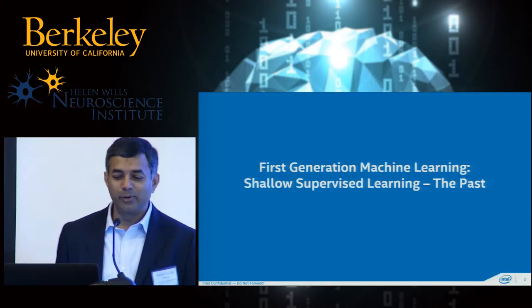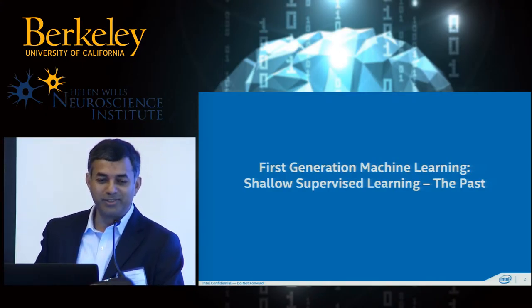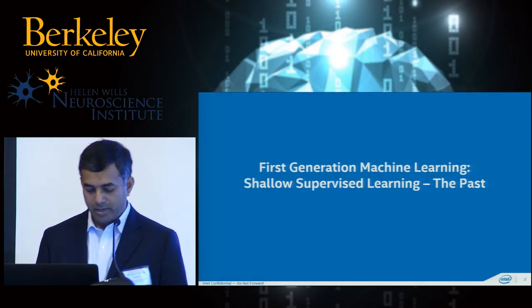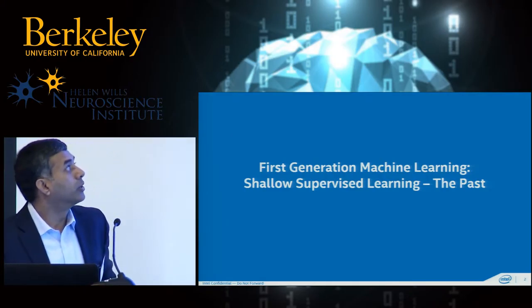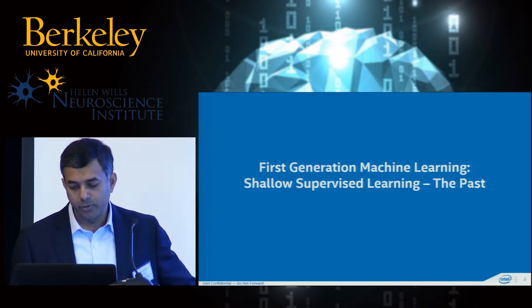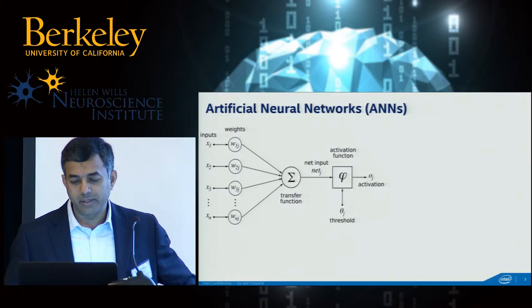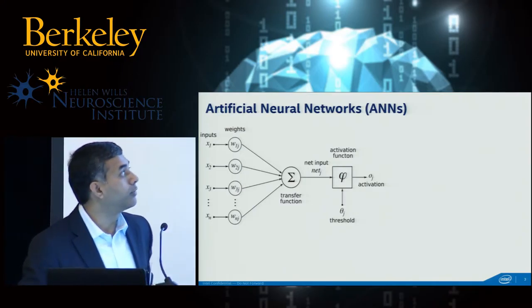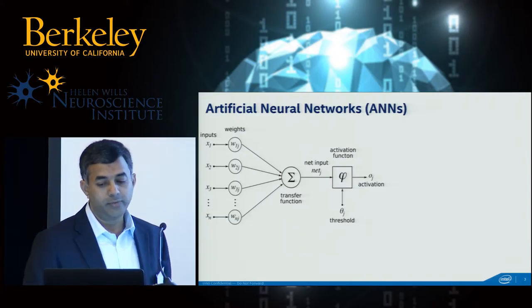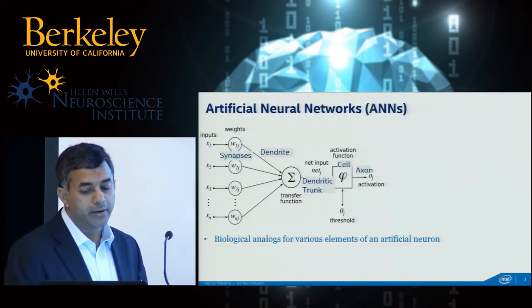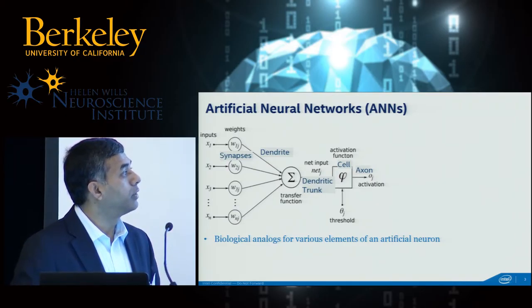My talk is going to be a landscape talk in terms of what machine learning was, what it is today, and what we think it could be in the future, and how Intel may play a role in some of these technologies going forward. Please bear with me. The first generation machine learning — the past — was what we call shallow supervised learning algorithms. You have this feed-forward model with biological analogs for various elements of the network.